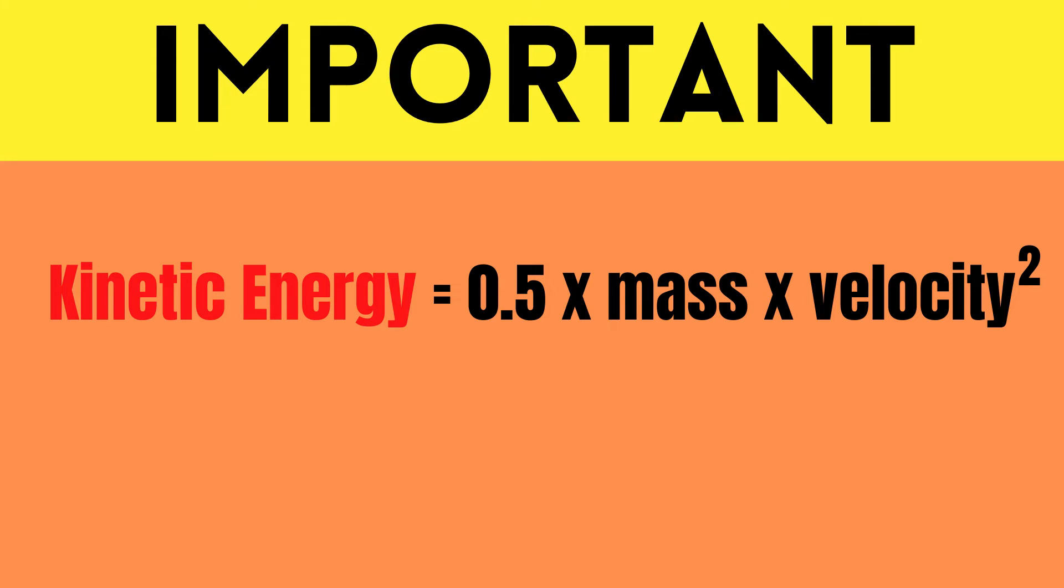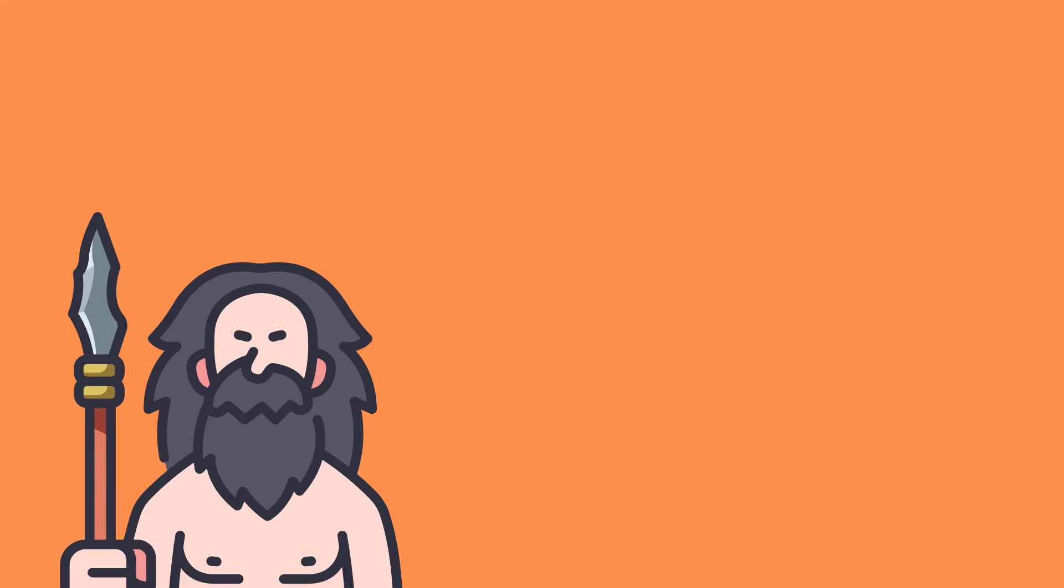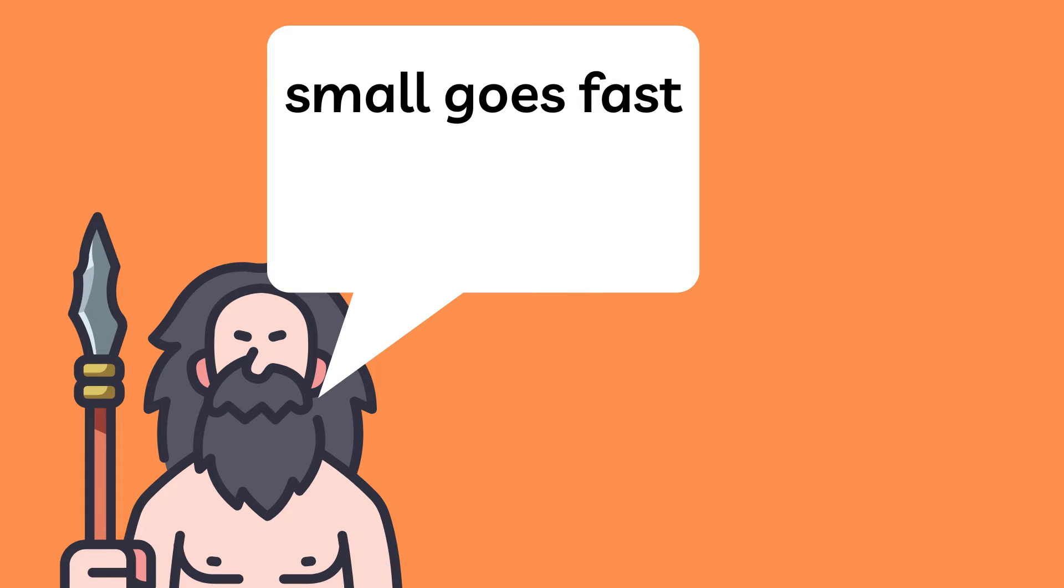Kinetic energy on the other hand is half of the mass of the particle times its velocity squared. In other words, the velocity is inversely proportional to the size of the particle. In even simpler terms, small particle means fast particle and big particle means slow particle.